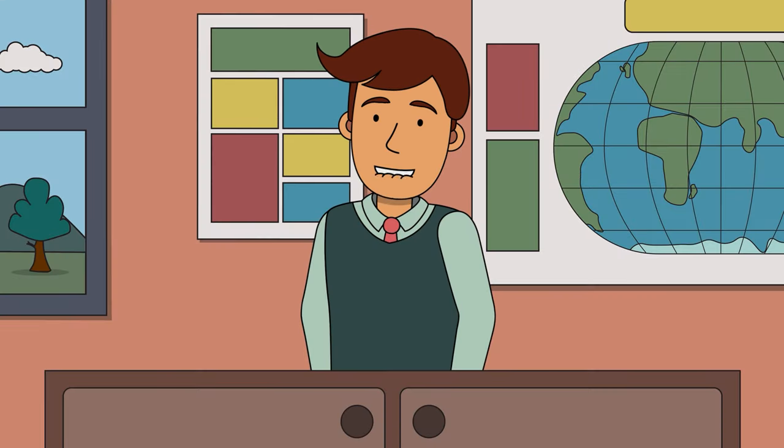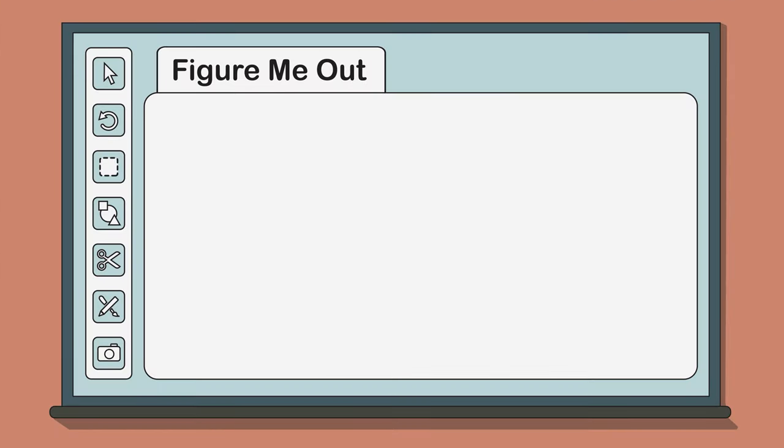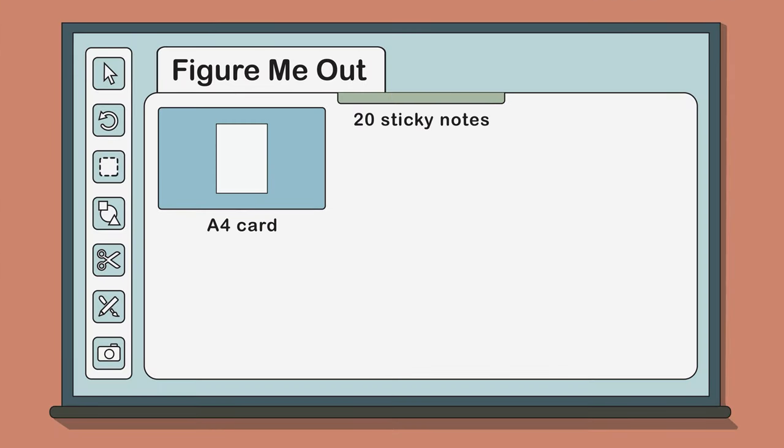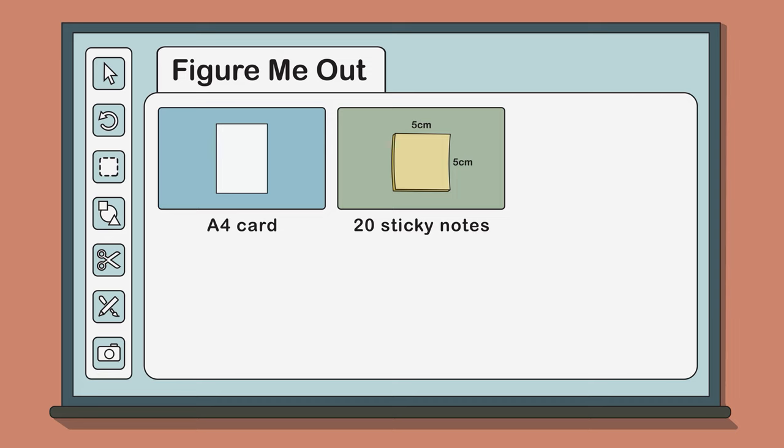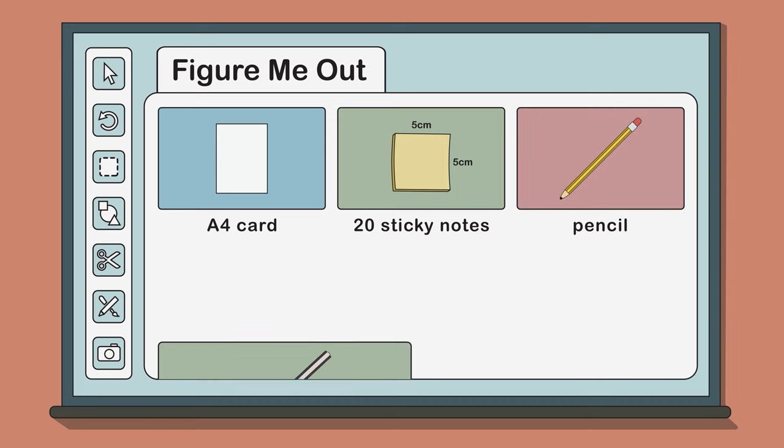To make a Figure Me Out poster you will need the following materials: a sheet of A4 card, 20 sticky notes, a pencil, a felt tip pen and a glue stick.